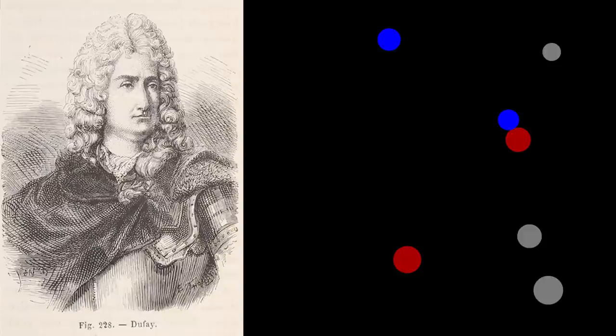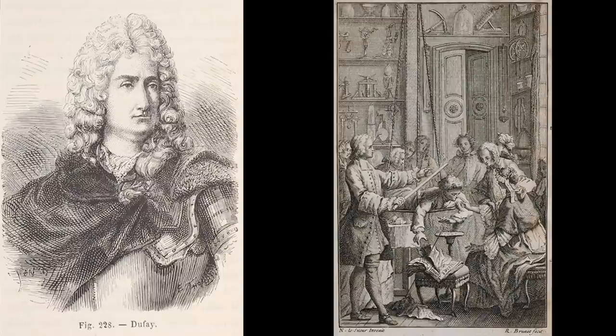Bodies which are not themselves electrics can acquire either of these electricities, and that then their effects are similar to those of the bodies which gave it to them. He gave these two types the names vitreous and resinous.